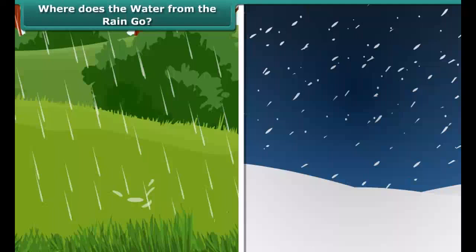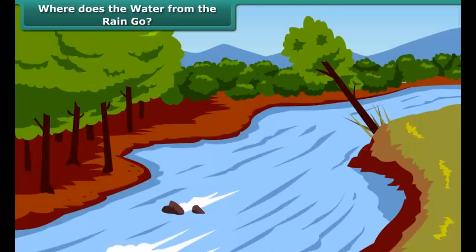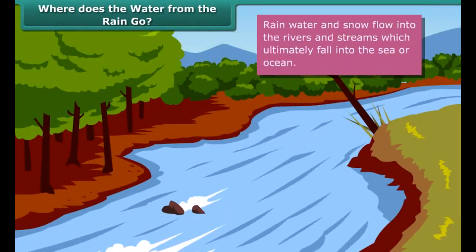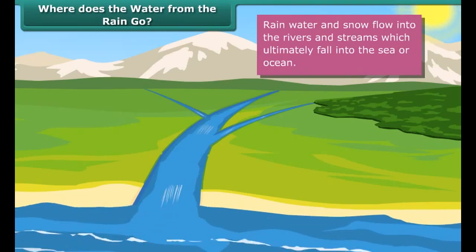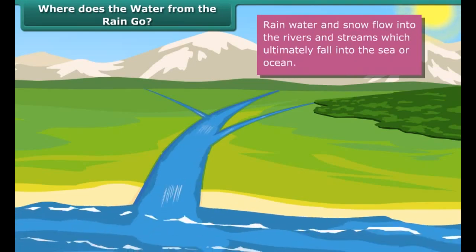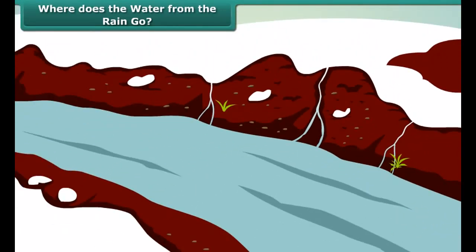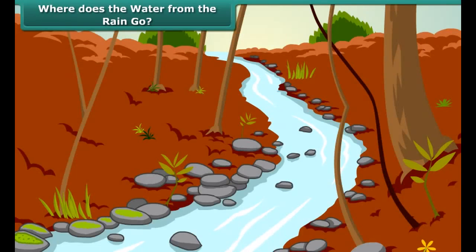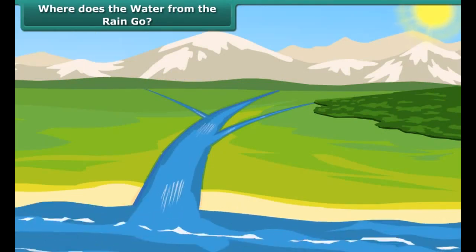Have you ever wondered where rain and snow go after reaching Earth? Rainwater flows as streams and fills up ponds, lakes, and rivers, and falls into the seas and oceans. Snow falls on mountains and later melts into water, flowing down in the form of streams and rivers. Thus, most of the water received from the sky finally flows into the oceans sooner or later.